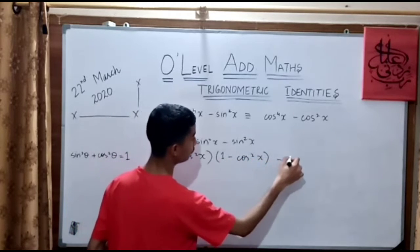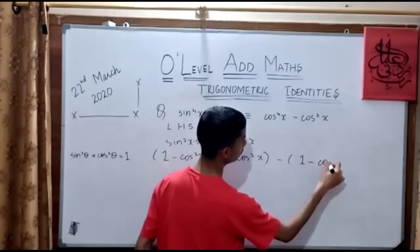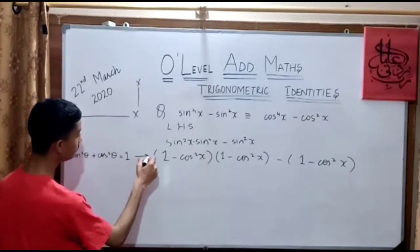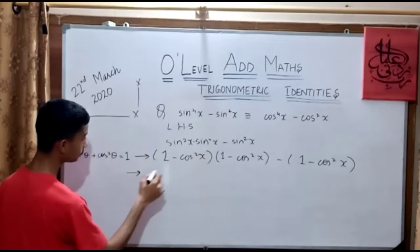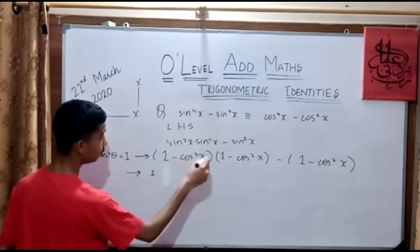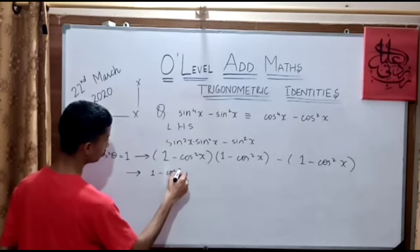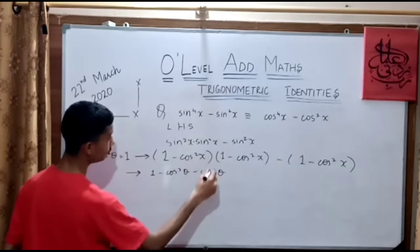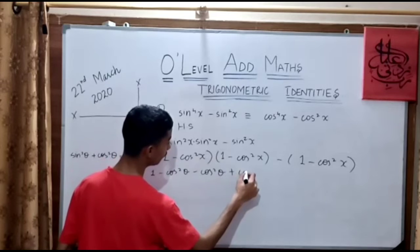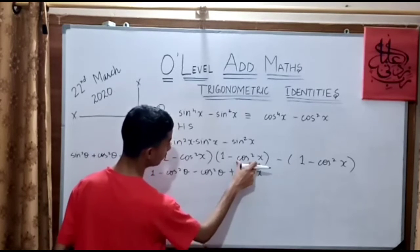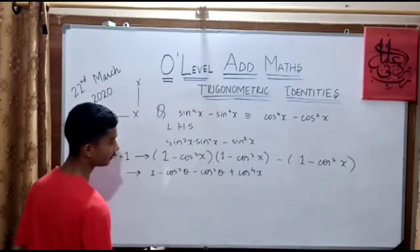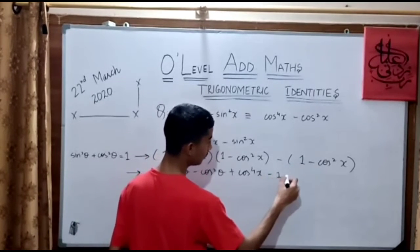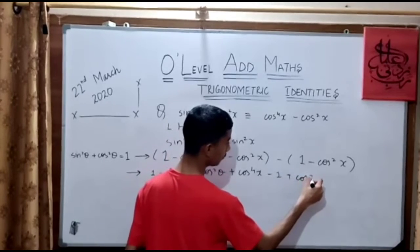Same substitution for each: 1 minus cos squared x. Now we have to solve — it is basic algebra. Multiplying out, it would be (1 minus cos²x) times (1 minus cos²x), giving 1 minus cos²x minus cos²x plus cos to the power 4 x. As you know, when the same base is multiplied, the powers get added. Then we multiply the minus sign with the bracket, giving minus 1 plus cos squared x.